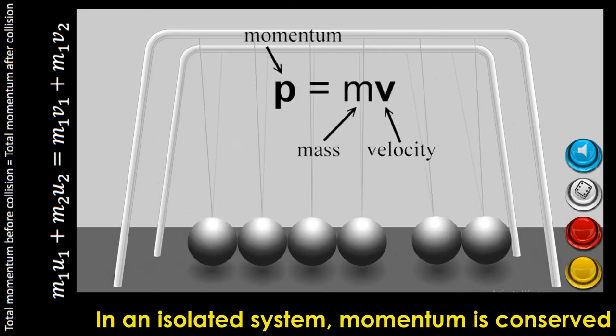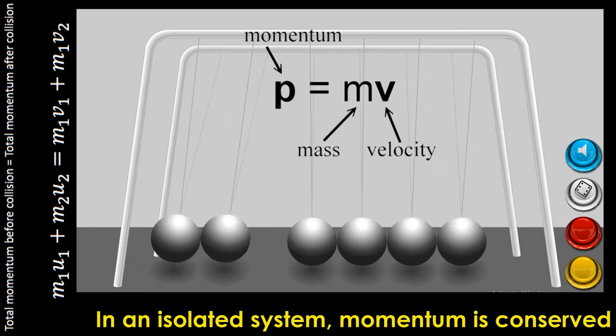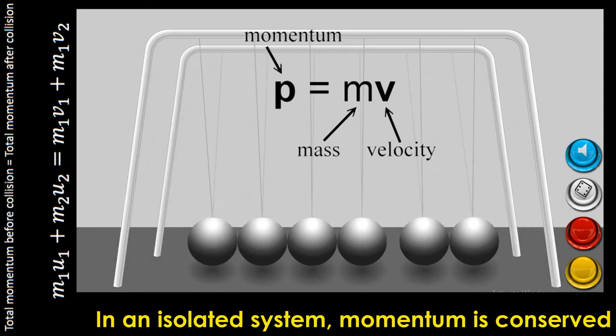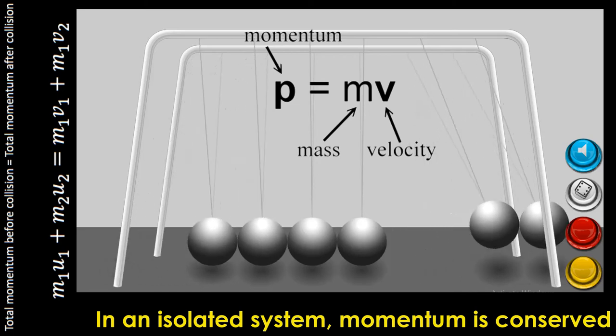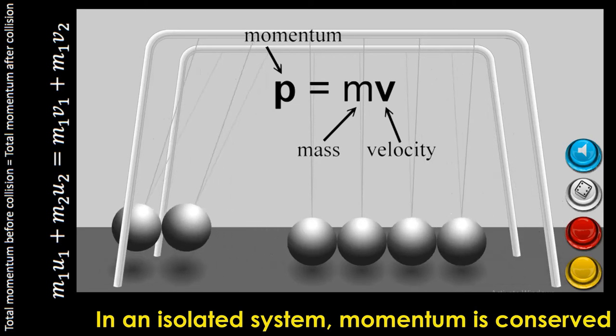The equation for momentum is mass times velocity: P equals mv. If mass is measured in kilograms and velocity in meters per second, the unit of momentum will be kilogram meter per second or newton second.